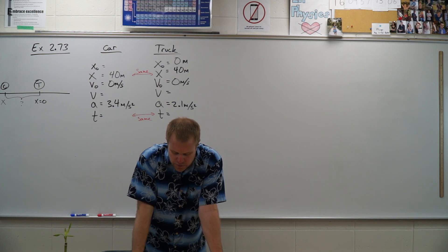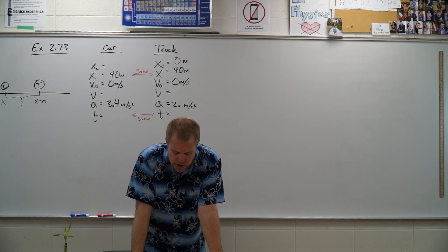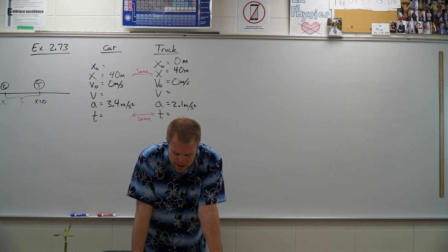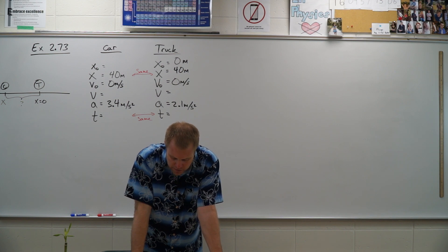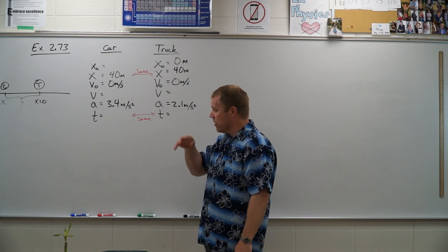The truck has a constant acceleration of 2.1 meters per second squared and the automobile an acceleration of 3.4 meters per second squared. The automobile overtakes the truck after the truck has moved 40 meters. How much time does it take the automobile to overtake the truck and how far was the automobile initially behind the truck?